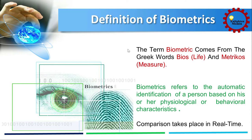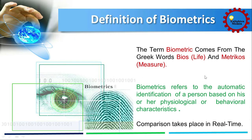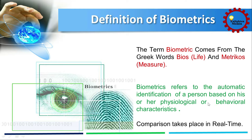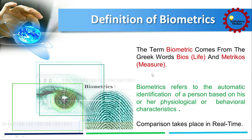The term biometrics comes from the Greek word 'bios,' which means life, and 'metron,' which means measure. So real-time life measurement equals biometric. Biometrics refers to the automatic identification of a person based on his or her physiological or behavioral characteristics.